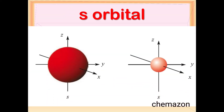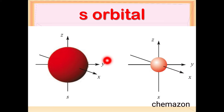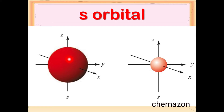Let us now understand the different types of atomic orbitals. The first is the S orbital. You can see it is a very fundamental orbital which is spherical in shape, and the entire region of the S orbital will have one phase.